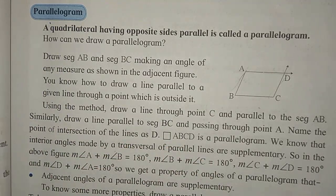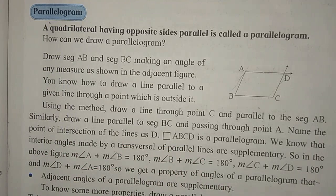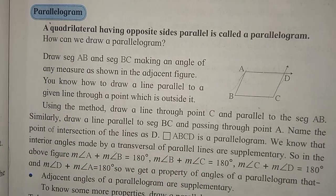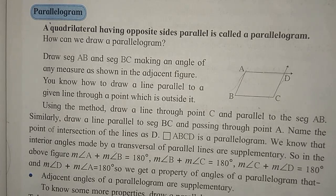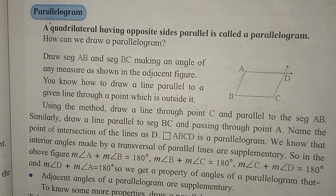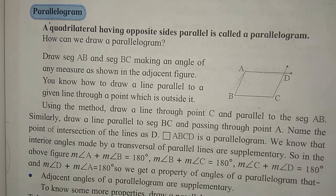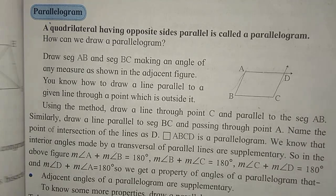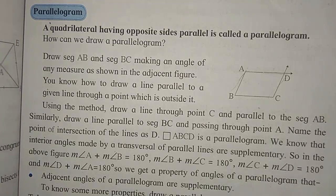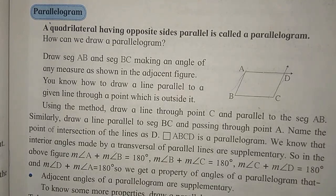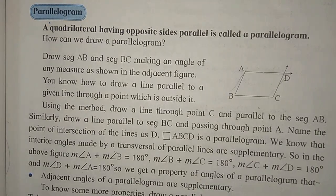This is the third video of lesson number 8, named Quadrilateral Constructions and Types. In the previous two videos, we covered construction of triangles in the first video, and types of quadrilaterals — square, rectangle, and rhombus — in the second video. In this video, we are going to see the remaining types of quadrilaterals.